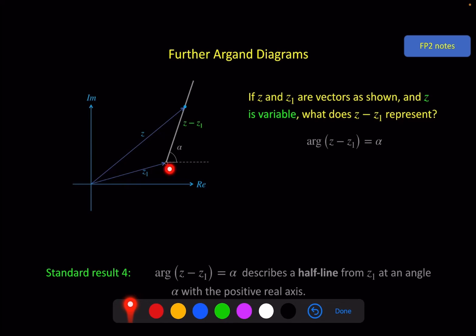A half line from z1 at an angle alpha with the positive real axis. Now it's worth noting here, I've drawn this with a little open circle. That's because z1 itself is not included in the locus. So draw that with a little open circle like you have done before with inequalities.